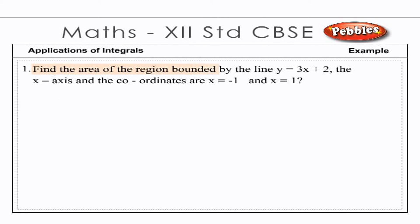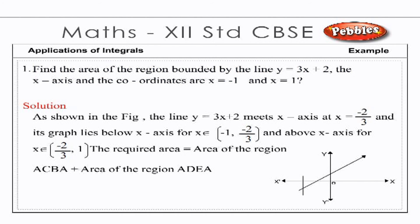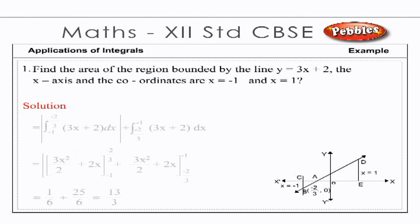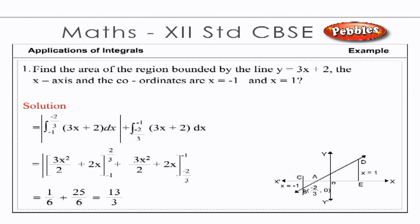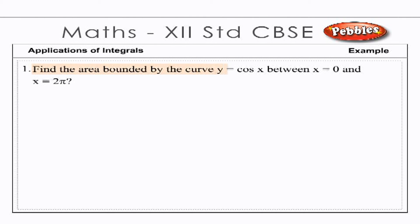Find the area of the region bounded by the line y = 3x + 2, the x-axis and the ordinates x = −1 and x = 1. Solution: As shown in the figure, the line y = 3x + 2 meets the x-axis at x = −2/3, and its graph lies below the x-axis for x ∈ (−1, −2/3) and above the x-axis for x ∈ (−2/3, 1). The required area equals the area of region ACBA plus the area of region ADEA. Substituting values and simplifying, the required area equals 13/3.